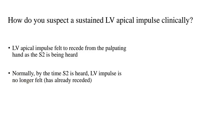Normally, by the time you hear the second heart sound with the stethoscope, the LV impulse should no longer be felt by your palpating hand — meaning the left ventricular apex has already receded. But when you are still feeling that systolic thrust which is sustained and not completely receded by the time S2 is heard, you can say that this apical impulse is a sustained LV apical impulse.